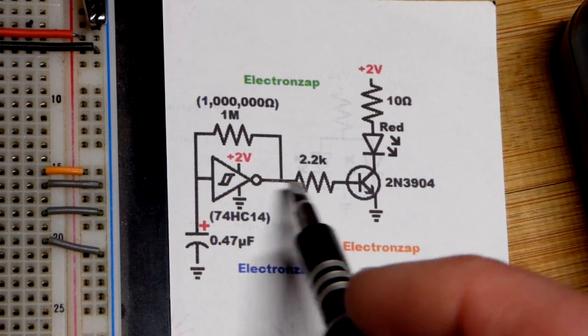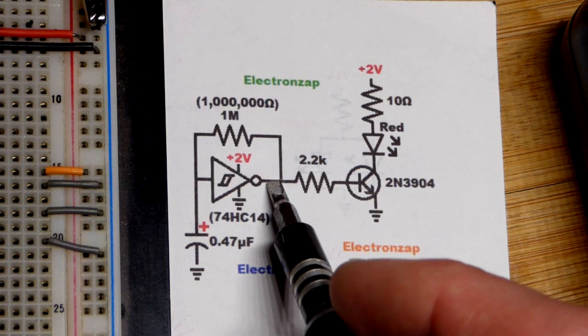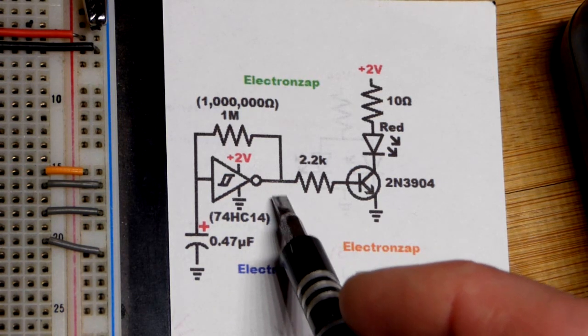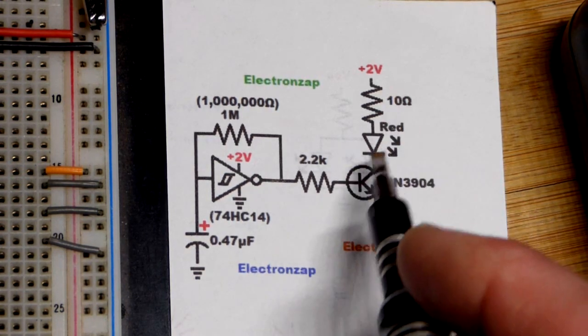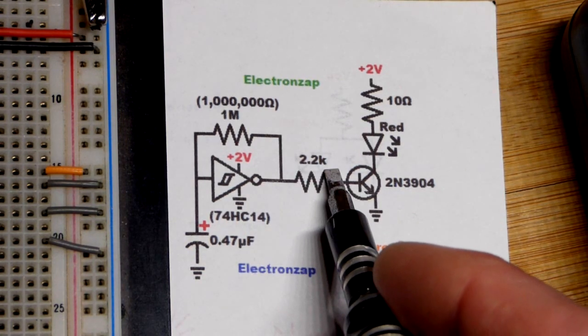But when you add a load with these high-speed CMOS versions, it seems to throw off the voltage rather quickly. So instead of powering the load directly, we just need a little bit of current. So I'm using 2.2 kilo-ohms, 2,200 ohms.